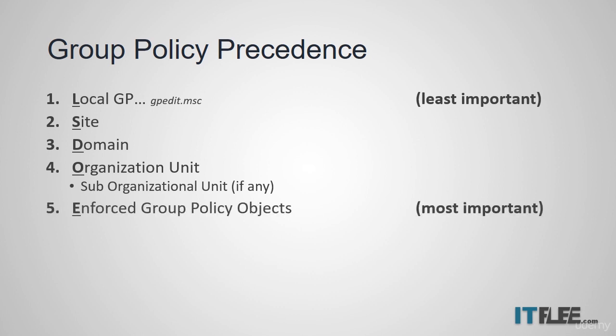Finally, we have enforced group policy objects. This is any GPO where you've right-clicked and chosen to enforce the GPO. Starting with local — the least important GPO because it's the first one computed — you end with enforced group policy objects. If there are conflicting settings between the local and the enforced, since the enforced group policy objects will be run last, they will take precedence.